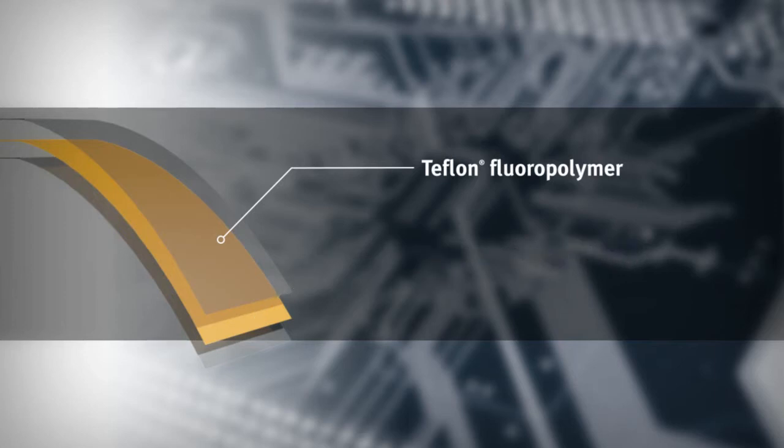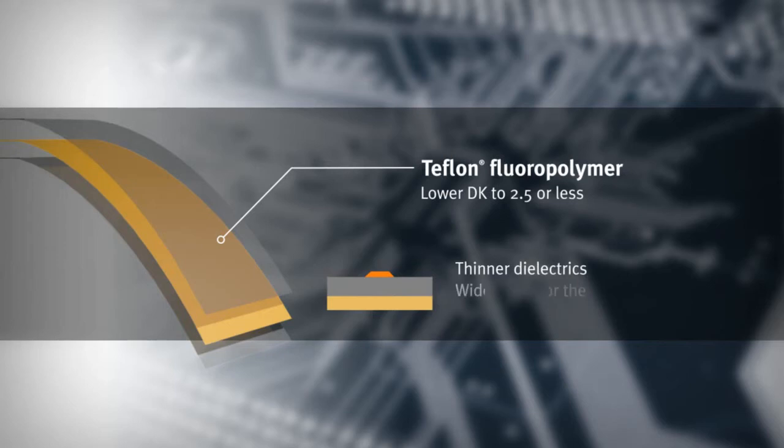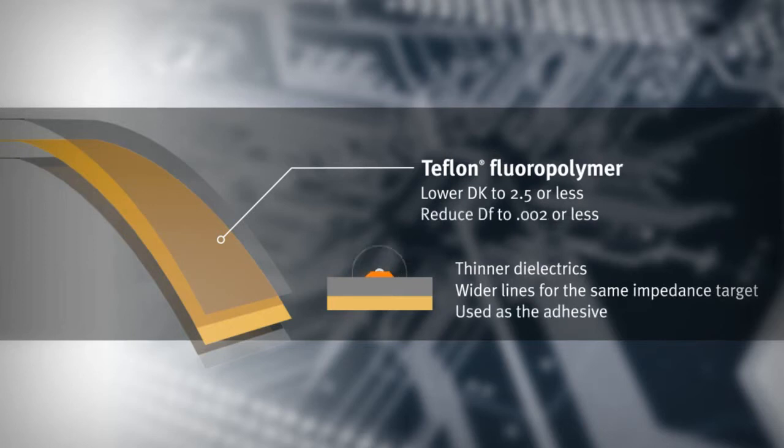The Teflon supplies a lower DK enabling thinner dielectrics as well as wider lines for the same impedance target. In addition, Teflon is used as the adhesive to reduce DF for higher speed and less signal loss.